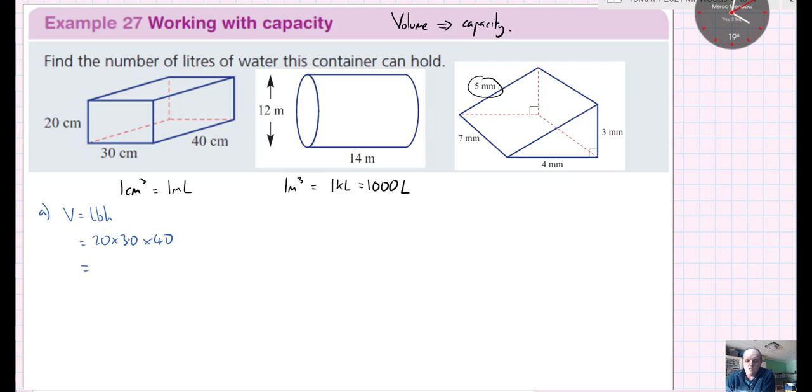So 2, 3s are 6, and then 6, 4s are 24, so I'm going to have 24. But then I'm multiplying by another 10 times 10 times 10, so I'm multiplying by another 1,000. So I put three zeros in.